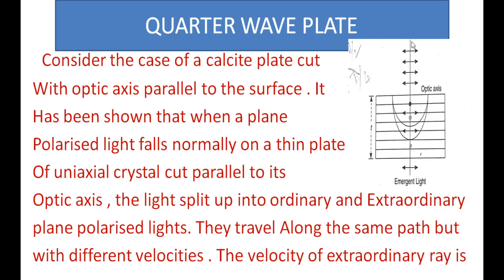This is a plane polarized light — already polarized light — incident normally on this thin plate. The Optic Axis of the uniaxial crystal is normal. When light is incident on this Calcite Crystal, it splits into ordinary and extraordinary polarized rays.